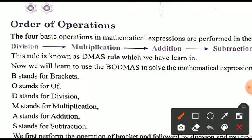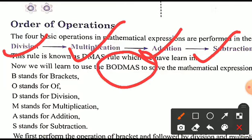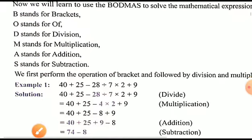The order of applying operations is: first division, after that multiplication, then addition, and after that subtraction. This is the BODMAS rule. In BODMAS: B stands for Brackets, O stands for 'Of' (which is also a multiplication), D for Division, M for Multiplication, A for Addition, and S for Subtraction.